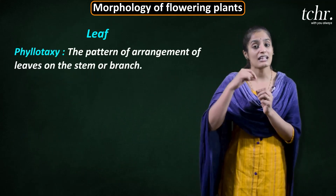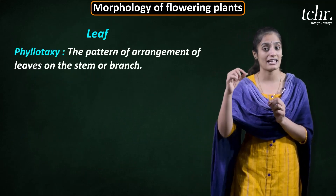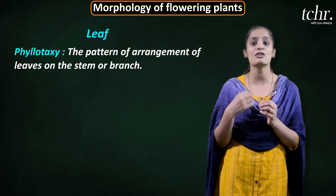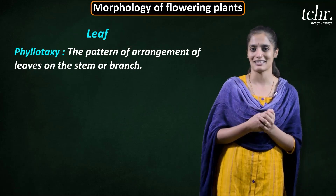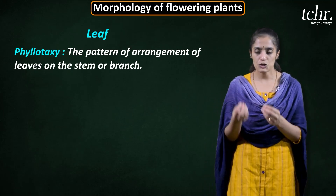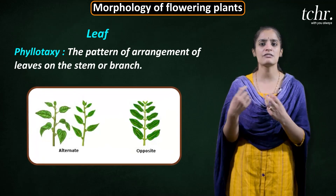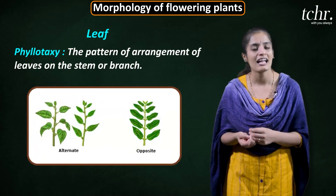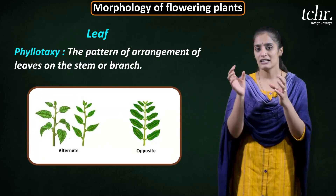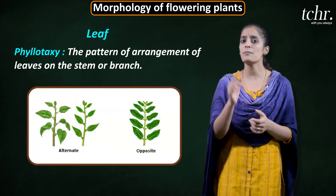The arrangement of leaves on the stem is called phyllotaxy. You have opposite phyllotaxy and also alternate phyllotaxy.